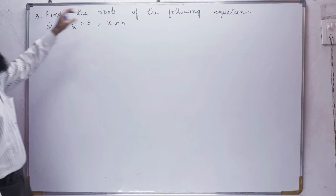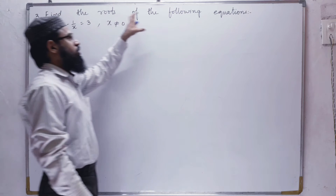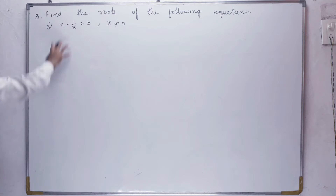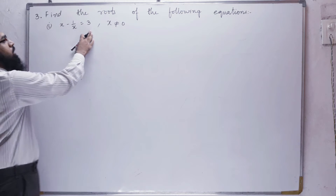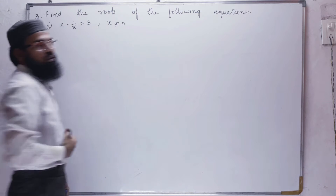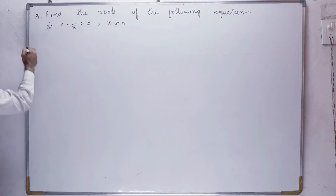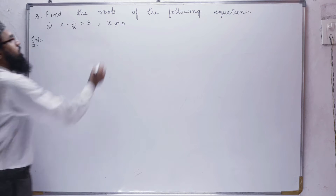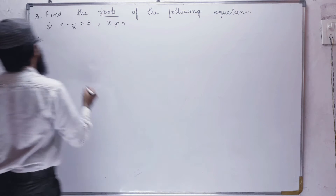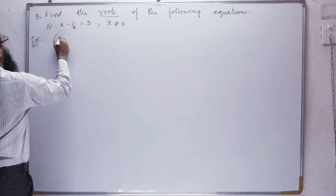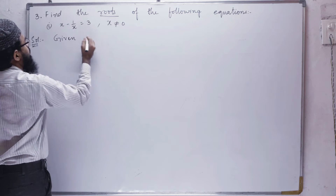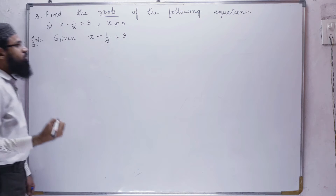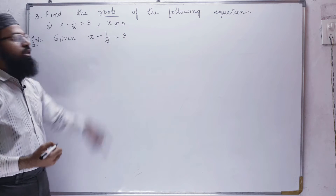Third problem: find the roots of the following equations. The first equation is x minus 1 by x equals 3, where x is not equal to 0. They have given this equation, let us solve this. We have to find the roots. Given: x minus 1 by x is equals to 3, but x is not equal to 0.